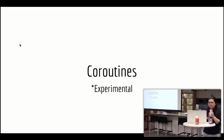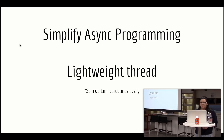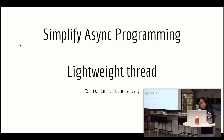Let's talk about coroutines — an important note: they're experimental, not yet officially released for production, but publicly available. Coroutines allow you to simplify asynchronous programming; they're basically very lightweight threads. You can spin up one million coroutines on an Android device very easily, which you absolutely could not do with regular threads. I think coroutines are really going to change Android development — you'll be able to write really nice-looking code using really lightweight concurrent execution.